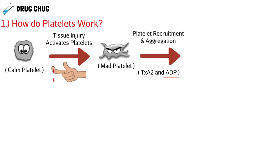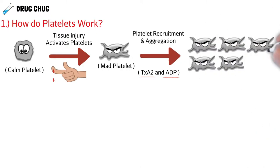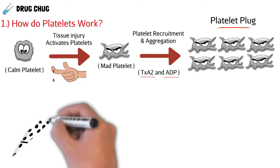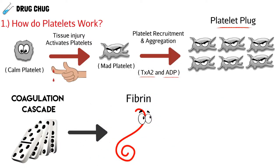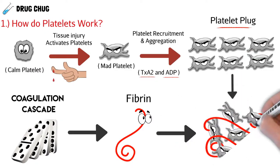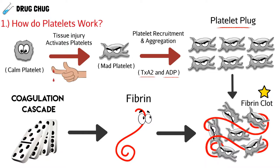Clopidogrel is an ADP receptor antagonist, so keep that in mind. Once platelets are recruited together they form a platelet plug. While this is happening, the coagulation cascade forms fibrin — basically a fiber — which binds the platelets together to form a more consolidated fibrin clot, an even stronger blood clot than just platelets alone. Thromboxane A2 and ADP drive this platelet plug formation. If a patient has a risk of forming blood clots, we can reduce ADP binding on its receptor to prevent clots.